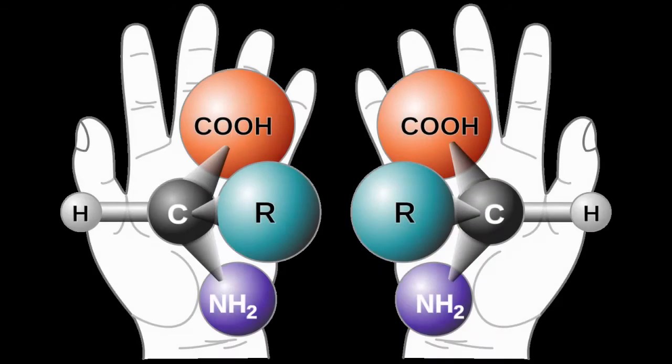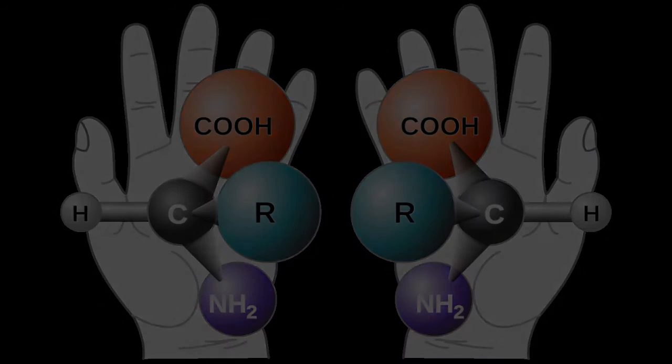Now that you understand what homochirality is and how amino acids and proteins affect the behavior of life, now let's talk about how antibiotics really work and how the mutation really causes the bacteria to adapt.